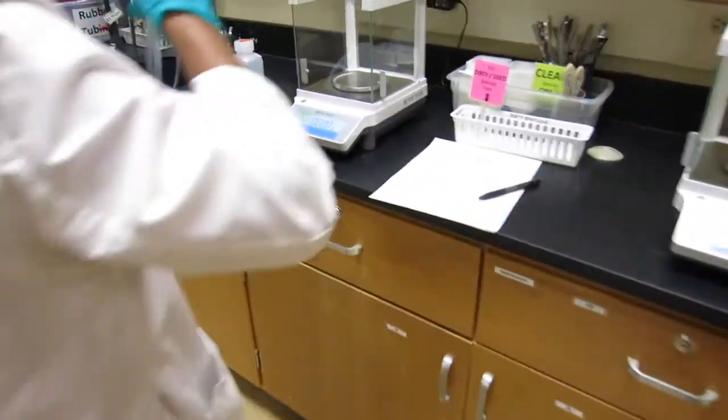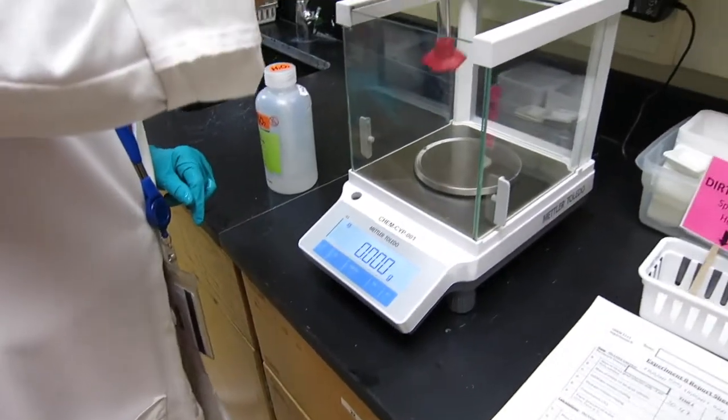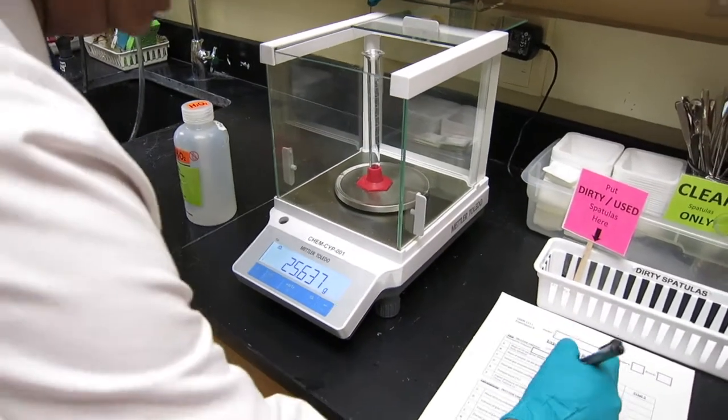Now we have to weigh the empty, zero, make a zero this one. We tare it again, and measure the empty graduated cylinder.